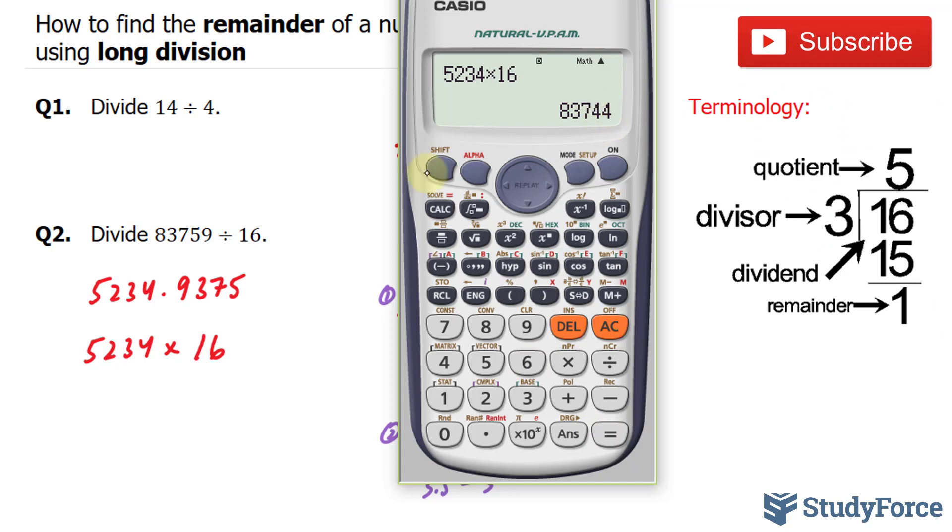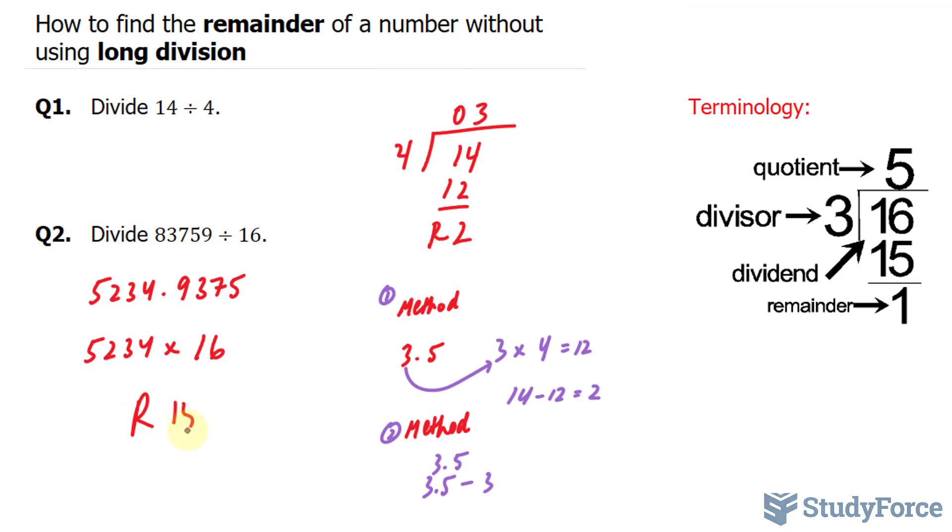I'm going to take this number and subtract it by the dividend, 83,759, the dividend, minus what I just found, and I end up with a remainder of 15. And there you have it. That is how to find the remainder of a number without using long division.